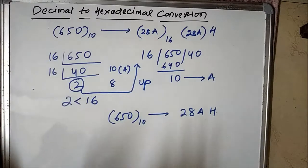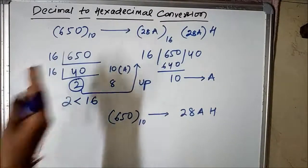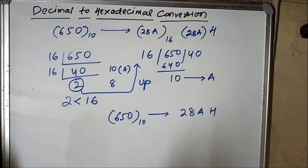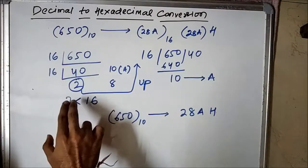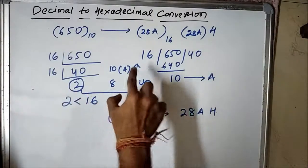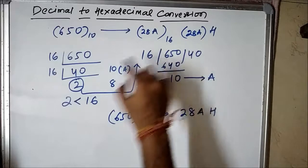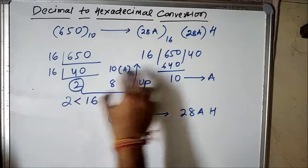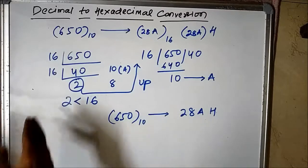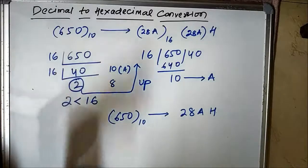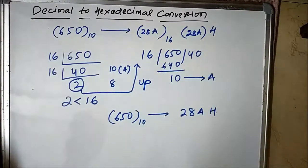We did the same thing as in the other conversion cases: we divided the decimal number by the base or radix of the hexadecimal system, which is 16. We performed repeated division until the quotient was less than the base — 2 is less than 16, so we stopped. Including that last quotient, we proceeded upwards noting all the remainders. The last quotient is 2, then remainder 8, then remainder 10 which is written as A. This is the same principle used in decimal to binary and decimal to octal, where we divided by 2 and 8 respectively.